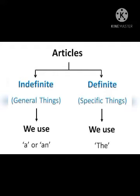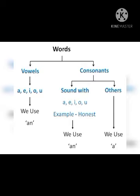Indefinite articles are of two types: A and AN. The definite article is just one: THE. Whether you say 'duh' or 'dee' also depends on the context. There are two parts of the alphabet: vowels and consonants. The five vowels in the English alphabet are A, E, I, O, U, and we use AN with words starting with these vowel sounds.